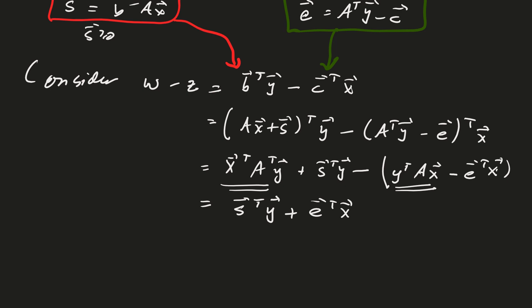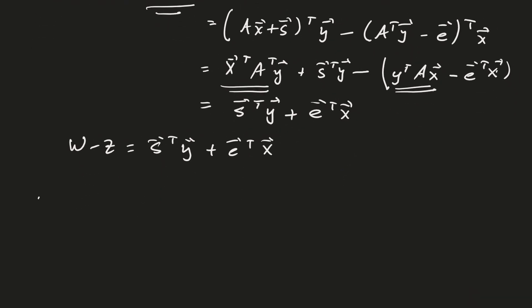So that is the quantity that I'm interested in. w minus z is actually equal to s transpose y plus e transpose x. Now at optimality, w is equal to z, and so therefore we get that s transpose y plus e transpose x equals 0.